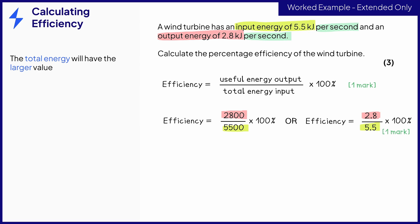The total energy will always be a large value because energy is conserved and we know that some of the energy transferred will be wasted energy. We want the largest value on the bottom so always pause to check this. So when we plug that into the calculator and multiply it by 100 to get the percentage, that gives an efficiency of 51% for the final mark.